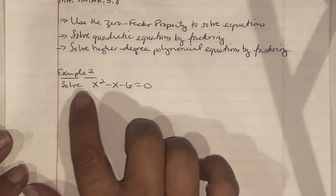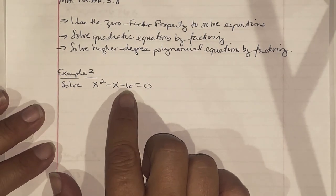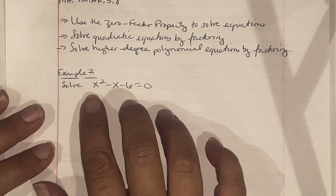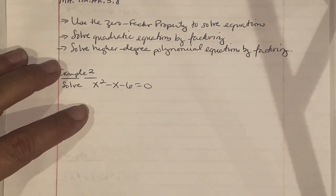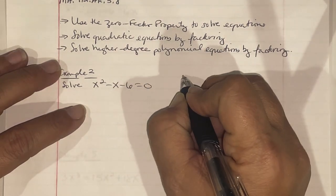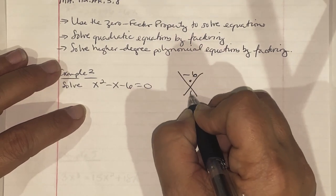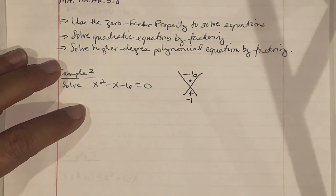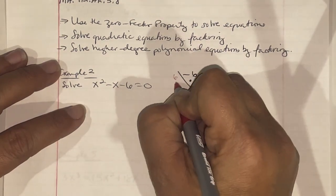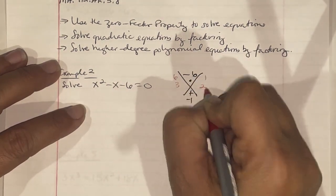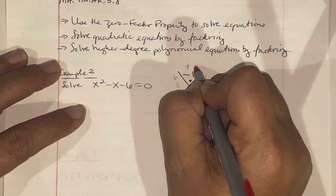Our first problem, Example 2, says solve x² - x - 6 = 0. We have three terms, so we're going to find numbers that multiply to get negative 6 and add to negative 1. 6 could be 6 and 1, or 3 and 2. One has to be positive and one has to be negative.